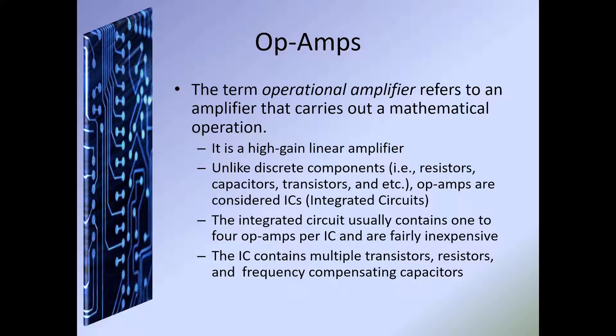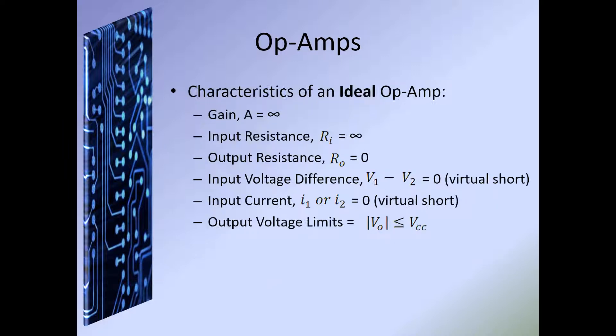The integrated circuit usually contains one to four op amps per IC and is fairly inexpensive. As you can see in your kits, some students have already purchased additional 741 op amps, and they were not that expensive. The IC contains multiple transistors, resistors, and frequency compensating capacitors, which we'll talk about later.